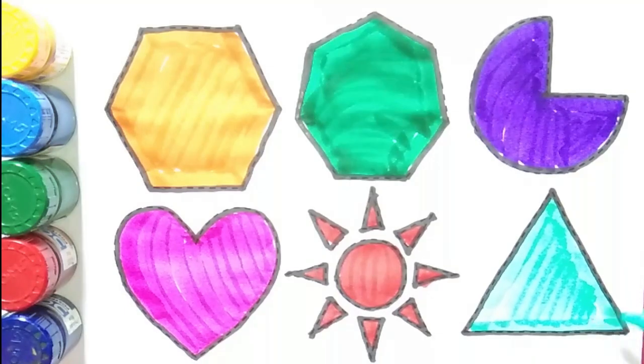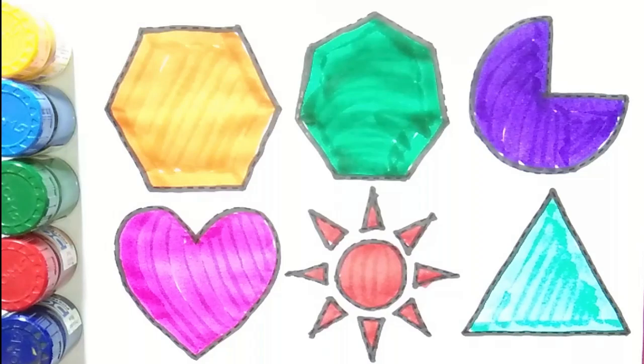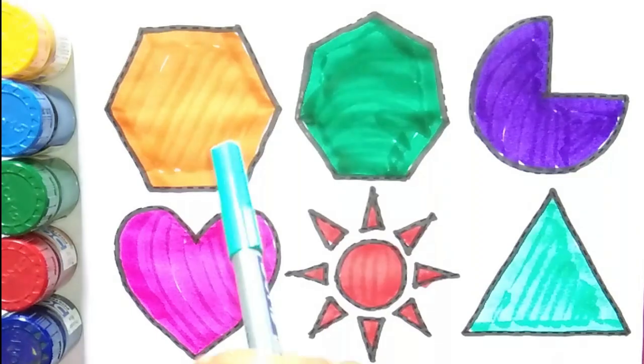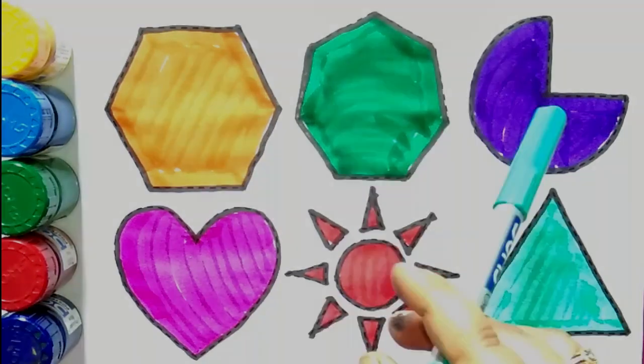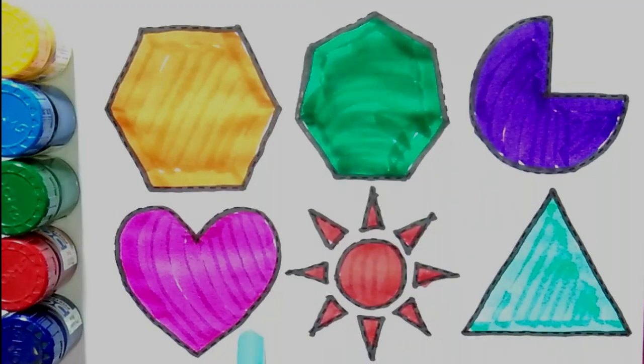And this is triangle. Now we will repeat: hexagon, heptagon, partial circle, heart, sun, triangle.